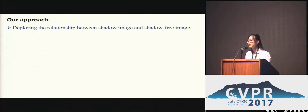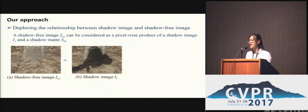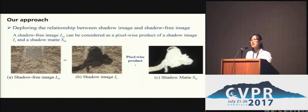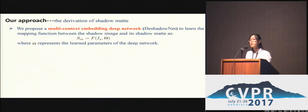To begin with, let us explore the relationship between shadow imagery and its shadow-free imagery. A shadow-free image can be considered as a pixel-wise product of a shadow matte and the shadow image. Thus, our shadow removal process is directly transformed to estimating a shadow matte for the input shadow image to remove shadows without shadow detection. We then propose a multi-context deep network, DeshadowNet, to learn the mapping function between the shadow image and its shadow matte.